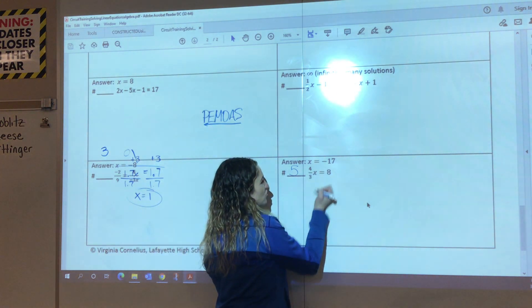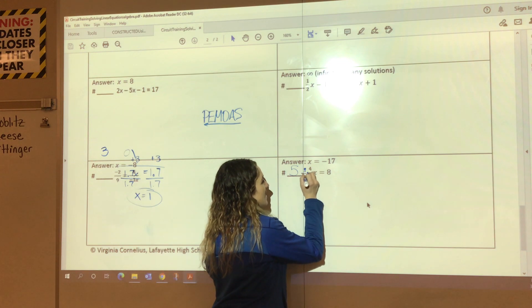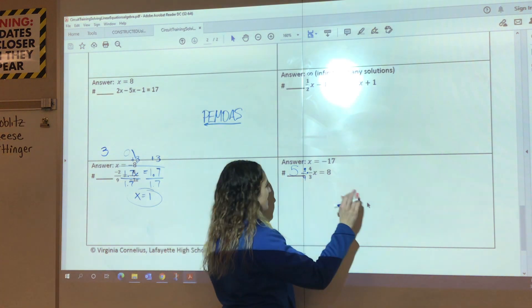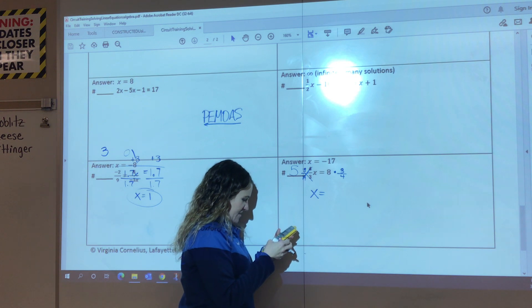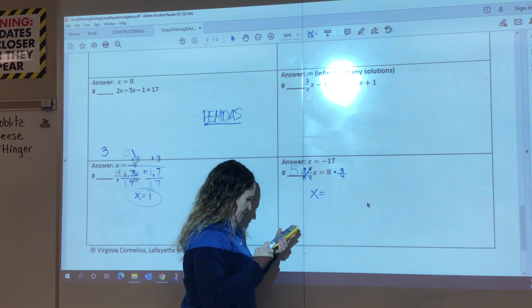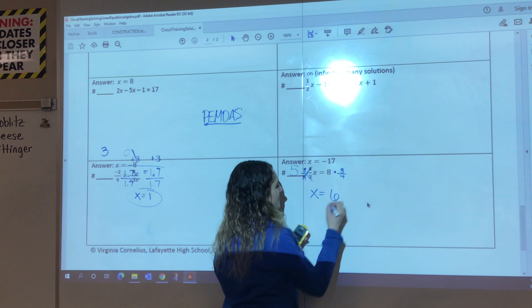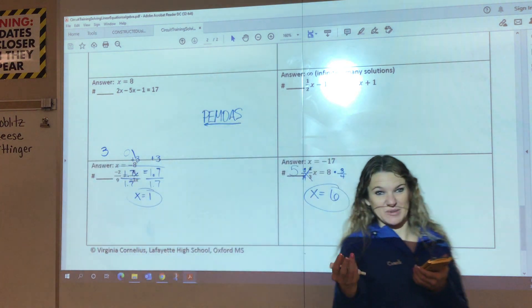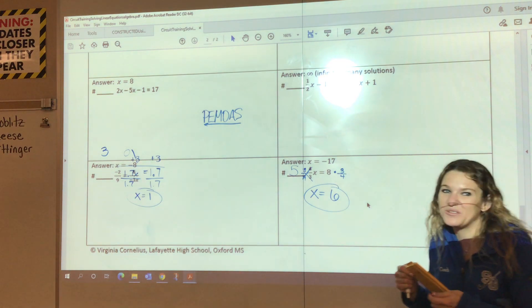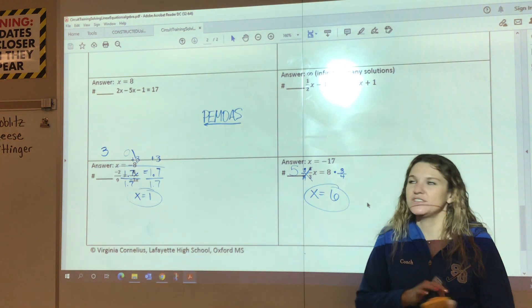All right, so right now my x is being multiplied by 4/3. I can either multiply by the reciprocal, which would be 3/4, and that's probably what I'm going to do. If you want to divide both sides by 4/3, that's also correct. I'm going to just multiply by 3/4. These are going to cancel out. And 100 times 3/4. I think I know what this is. All right.